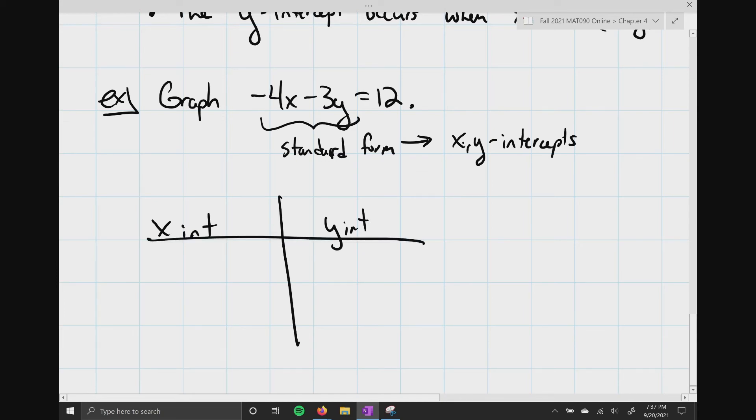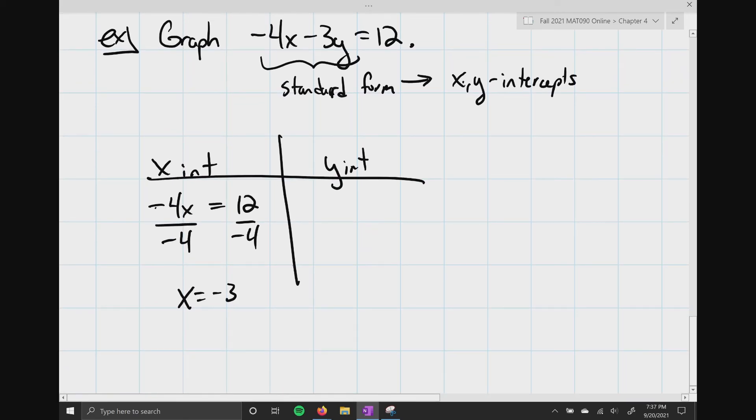Now, at an x-intercept, we know y equals 0. So, my equation just turns out to be negative 4x equals 12. Divide both sides by negative 4. I get x equals negative 3 for an x-intercept of negative 3 comma 0.